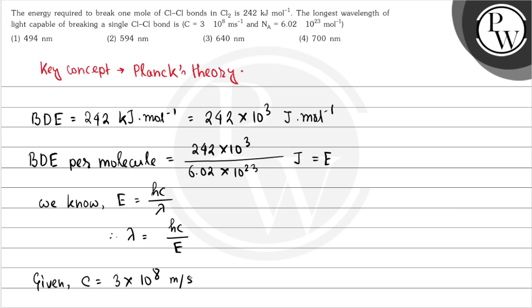And h is Planck's constant, which is 6.626 × 10^-34 Joule-second. Now we will put the values of c, h, and E to calculate lambda.